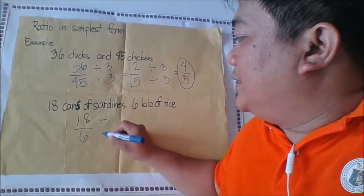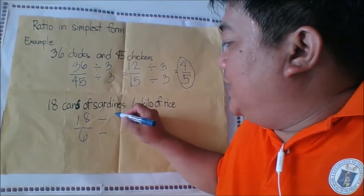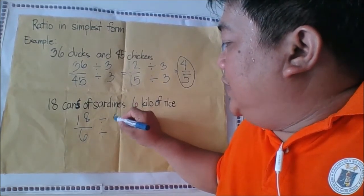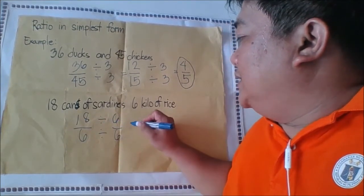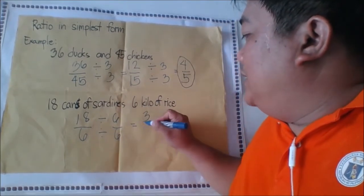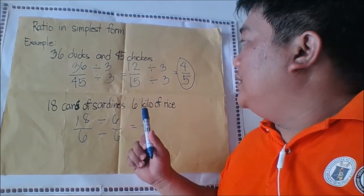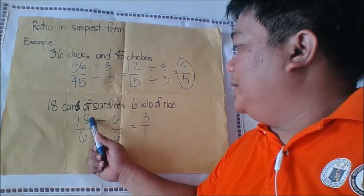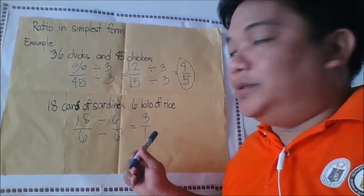The common factor is 6. So 18 divided by 6 is equal to 3, then 6 divided by 6 is 1. So the simplest form of 18 and 6 is 3 to 1.